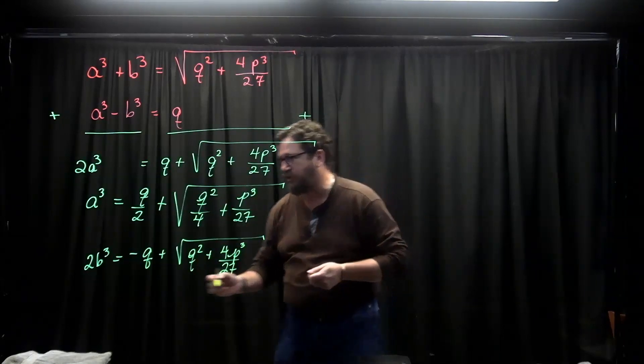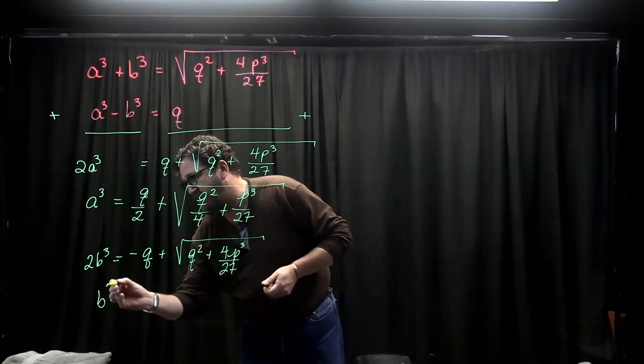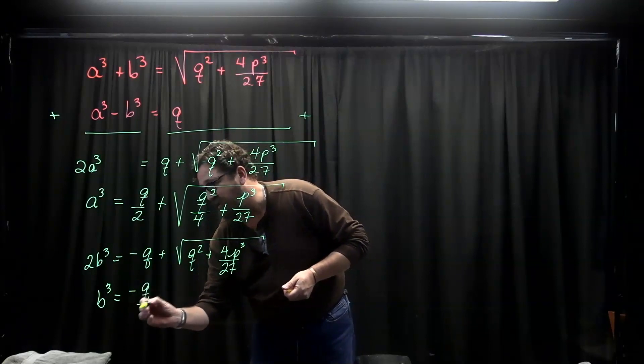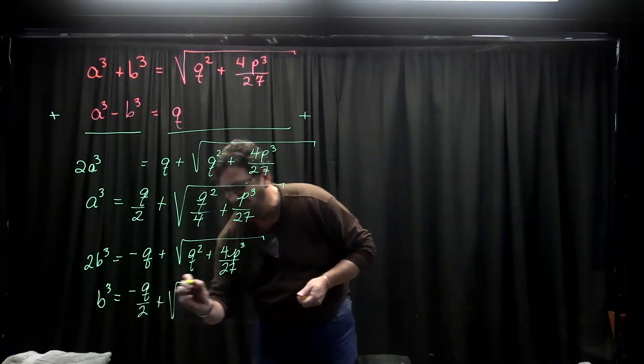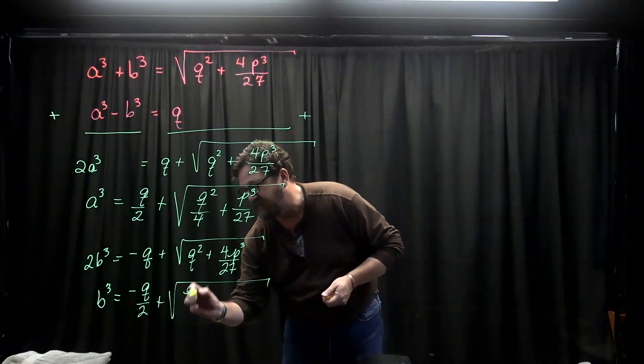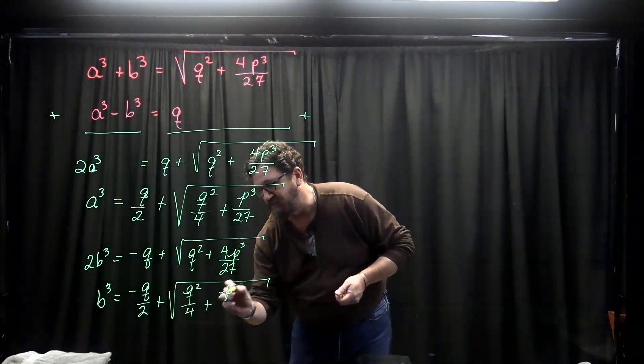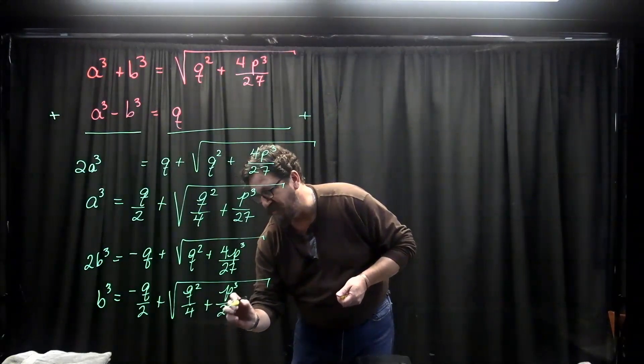I'm going to do the same thing, divide by 2. So b cubed is going to be equal to the opposite of q over 2 plus the square root of q squared over 4 plus p cubed over 27.